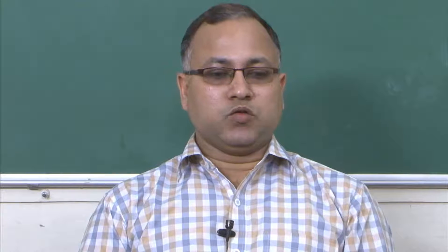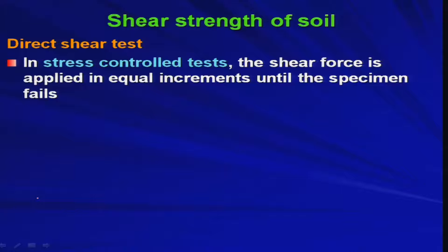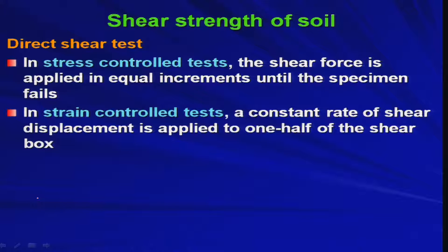The first thing we took up is the direct shear test. There, we talked about two different types of tests. One is a stress control test, another one is a strain control test. In the stress control test, the shear force is applied in equal increments until the specimen fails. Whereas in the strain control test, a constant rate of shear displacement is applied to one half of the shear box.